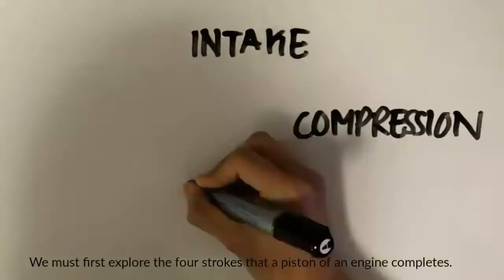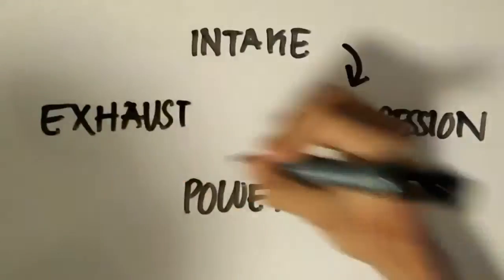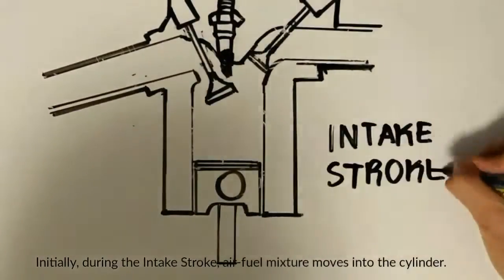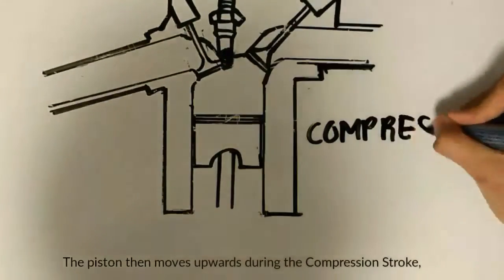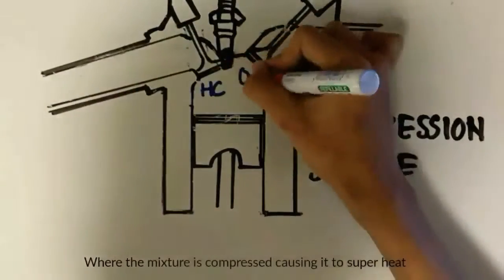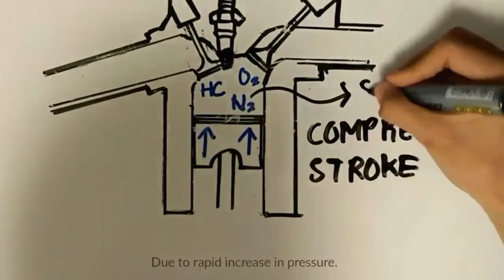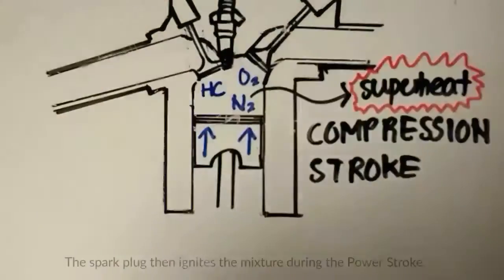Before I answer the three questions, I must first explore the four strokes that the piston in the engine completes. Initially, during the intake stroke, the air-fuel mixture moves into the cylinder. The piston then moves upwards in the compression stroke, where the air-fuel mixture is compressed, causing it to superheat due to rapid increase in pressure.